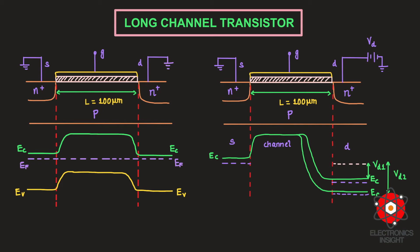Once we understand the energy band diagrams for different types of semiconductors, it becomes easy to analyze the band bending diagram for long channel and short channel transistors. Let us first look at the energy band diagram for a long channel transistor with drain-to-source voltage equal to zero. Here I have drawn the n-channel MOSFET cross-sectional view with channel length of 100 micrometers, making it a long channel transistor.